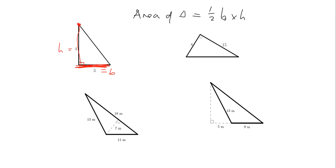The area of this triangle will be half times four times three. Four times three is 12, and half of that is six — so the area is six. Now for the next one: we might be tempted to call this the base, but then we'd need the height from the corner directly opposite down to it, and we don't have that measurement. Instead, if we turn ourselves around and use this side as the base, the corner opposite does have a height coming down at 90 degrees. So the area is half times 8 times 15 — half of 8 is 4, and 4 times 15 gives us 60.